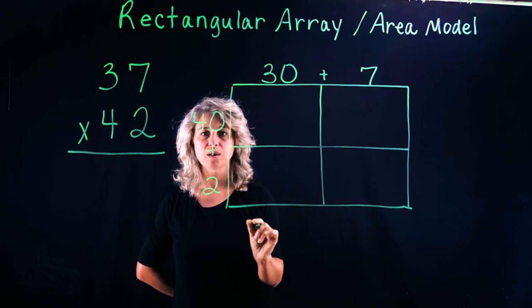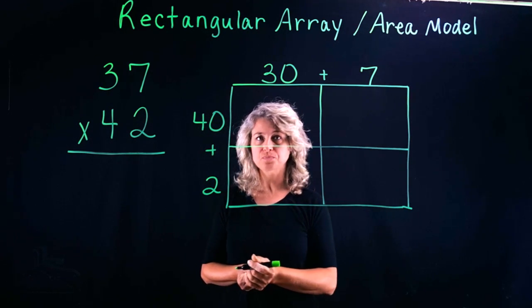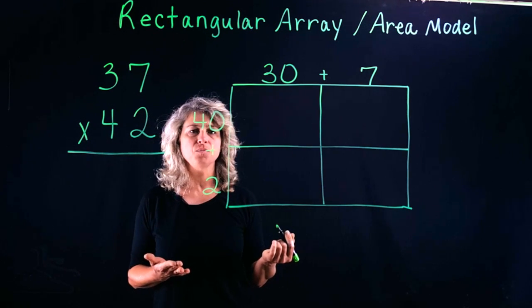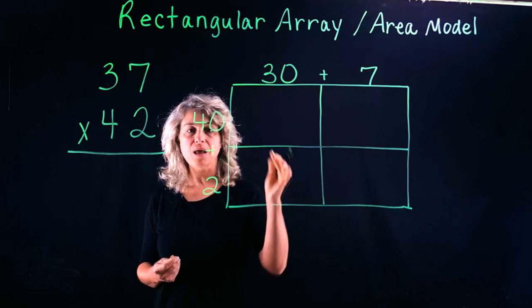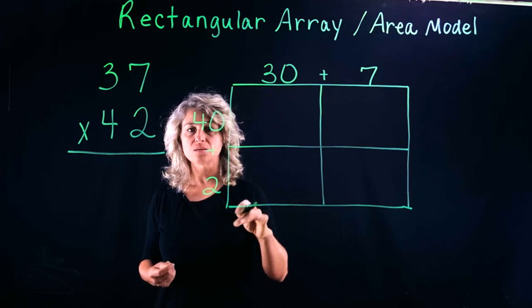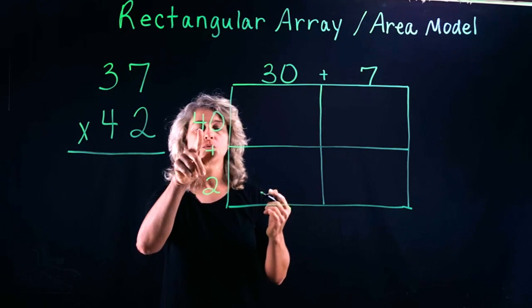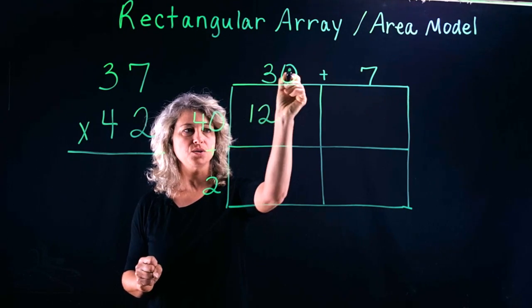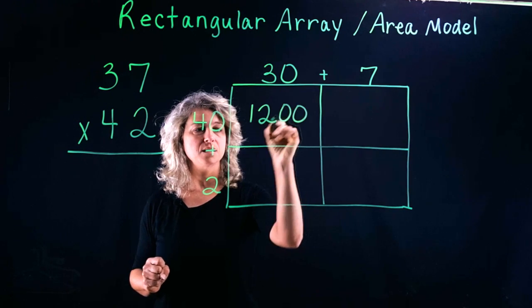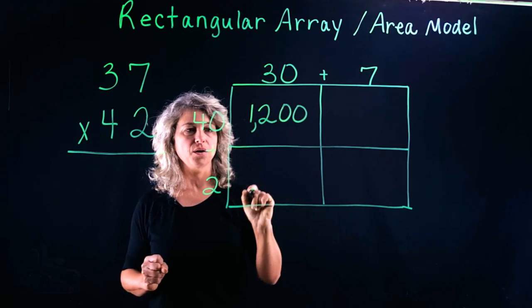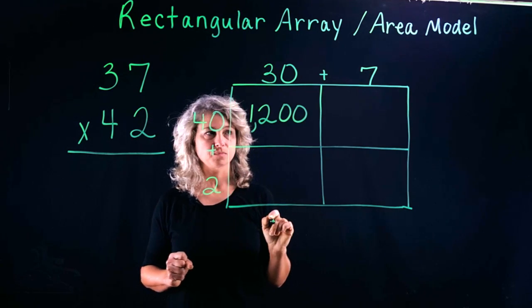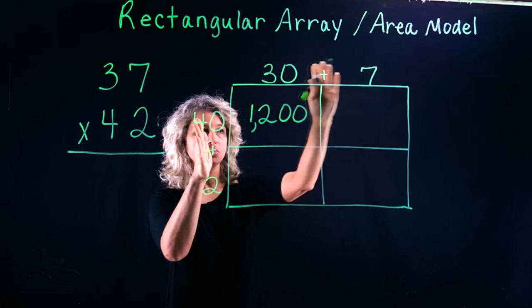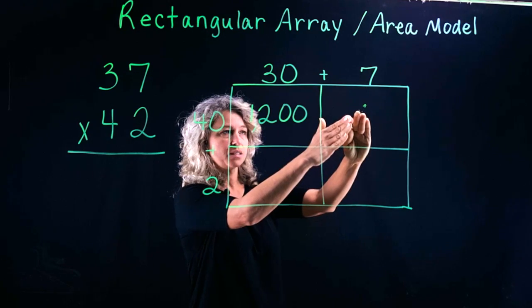Once you get this set up, then here is where we'll actually do the most multiplication. We'll also use some shortcuts by understanding that when we multiply using zeros, we can count the zeros. This will help us go a lot faster. 4 times 3 is 12, how many zeros do we see? One, two. So we will add the zeros: 40 times 30 is 1200.